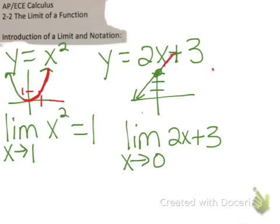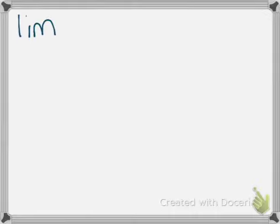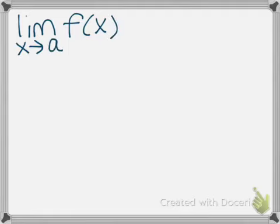In general, the limit of some function f(x) as x approaches a equals L. This exists if the left limit equals the right limit, meaning the limit as x approaches a from the left of f(x) must equal the limit as x approaches a from the right of f(x). If these are both equal to L, then the answer is L. All this is saying is the left side and the right side have to be approaching the same thing.